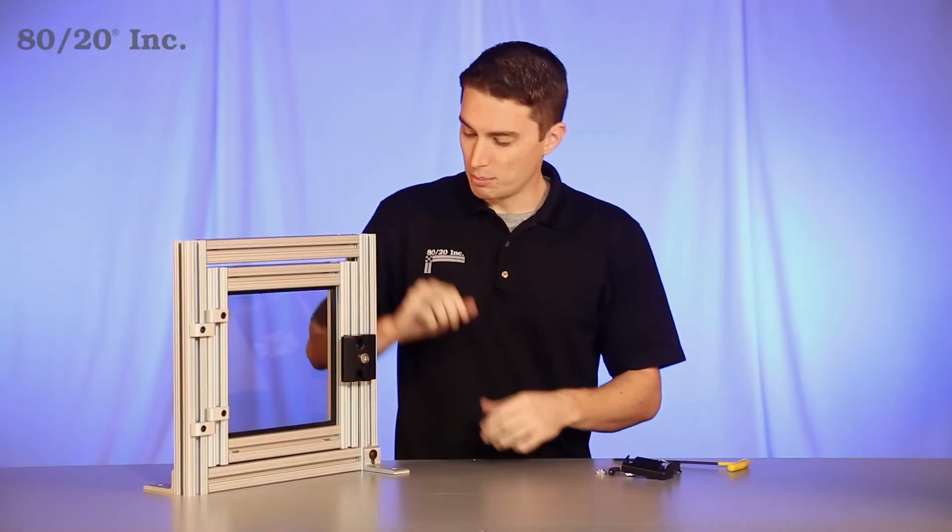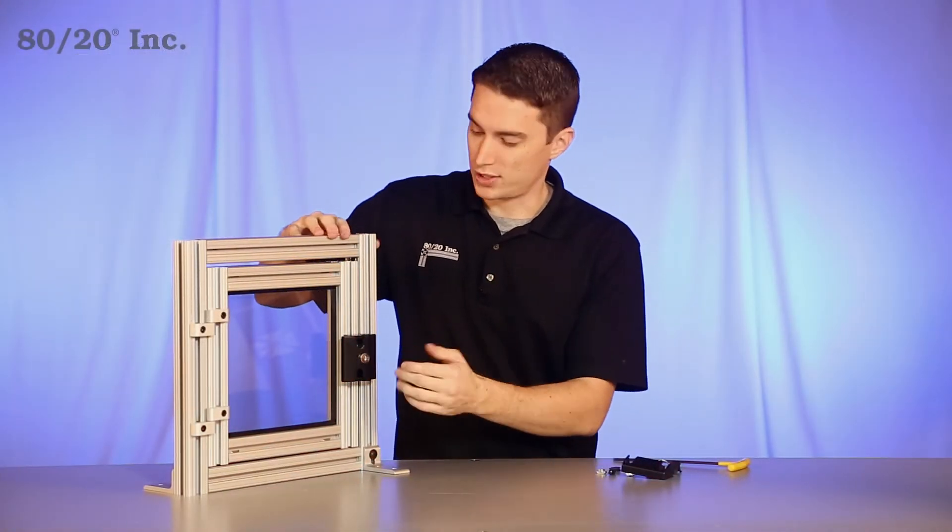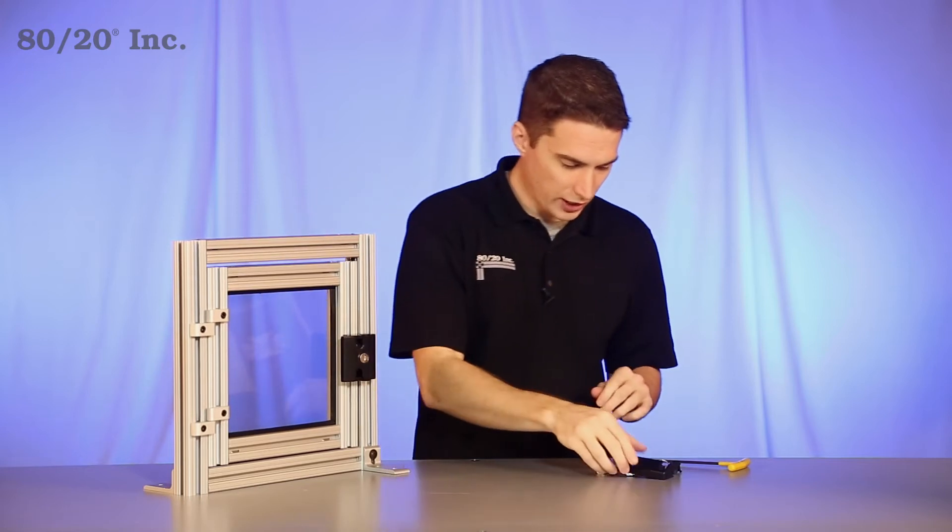When it comes to installing the SLAM Latch, both sides of it are installed in the same way. We've got the handle side already installed. Now we'll install the latch side.